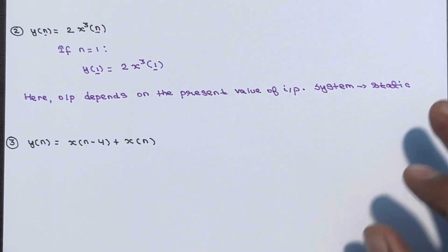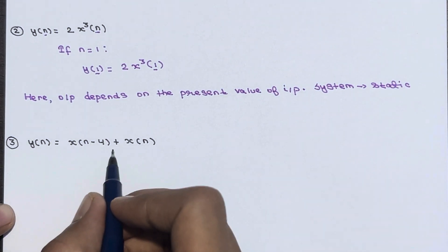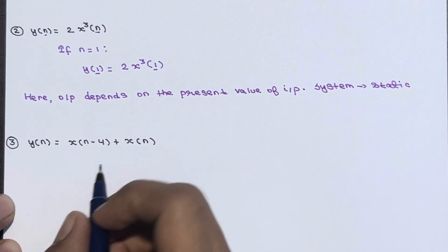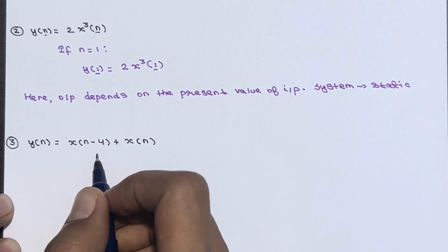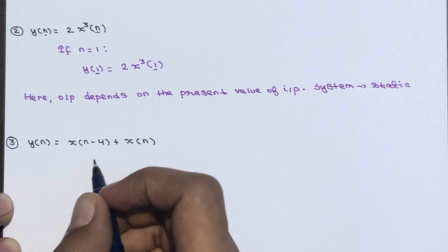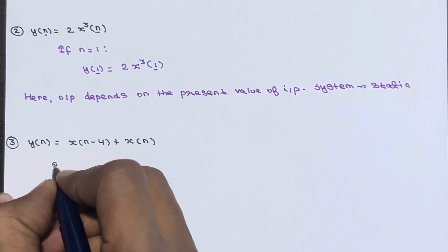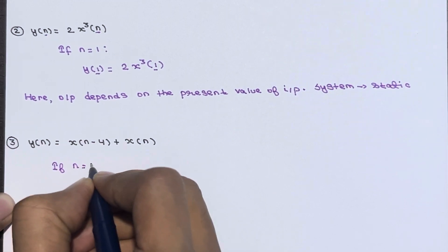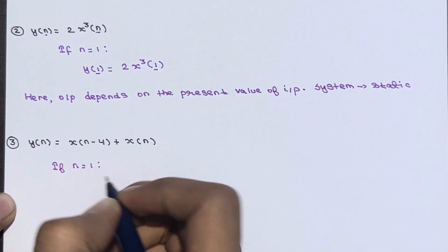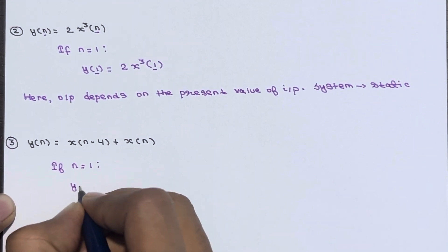Now the third example: y(n) = x(n-4) + x(n). Here n minus 4 is a past input, so you can say directly it is a dynamic system. But let's go through the approach — if n is equal to 1...